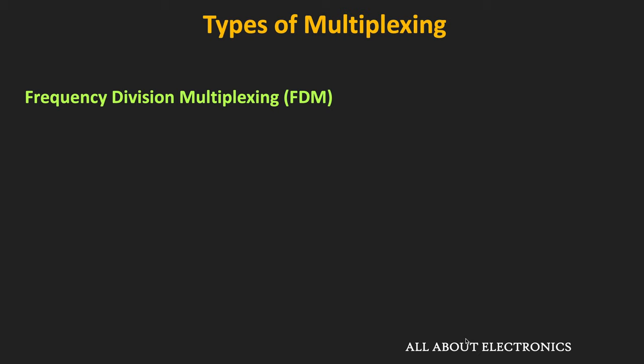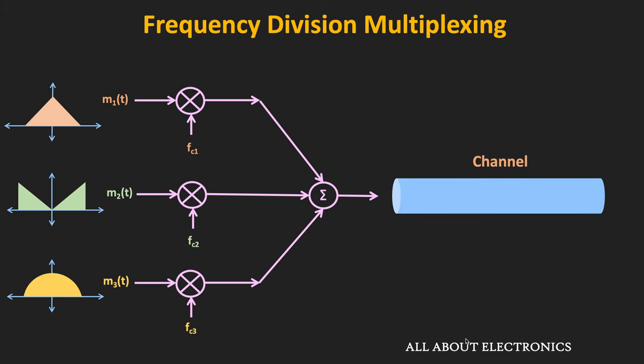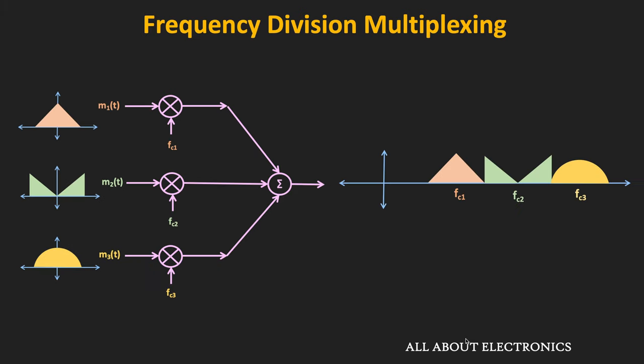In frequency division multiplexing, the message signals are modulated at different carrier frequencies. After modulation, these modulated signals are combined into a single composite signal and then transmitted over the single channel. In this case, as you can see, three different message signals are modulated at different carrier frequencies. After multiplexing, if you see the composite signal, each message signal is separated in the frequency domain.